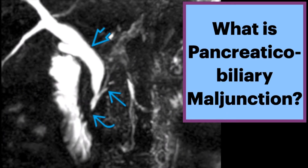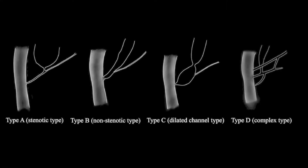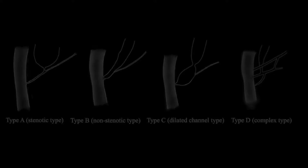What is pancreaticobiliary maljunction? This is a congenital malformation in which the pancreatic and common bile ducts join outside of the duodenal wall. There are several types depending on the presence of stenosis, biliary dilatation, complexity, and associated choledochal cysts.